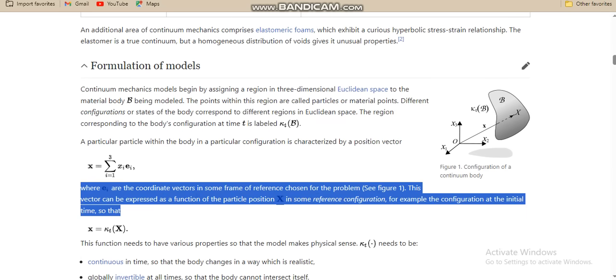The coordinate vector in some reference frame can be expressed as a function of particular particle position in some reference configuration, for example, the configuration at the initial time. This type of function must have various properties that model continuity in time.